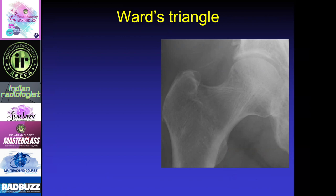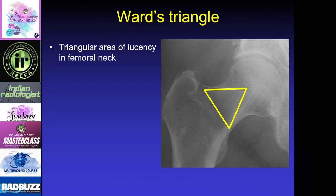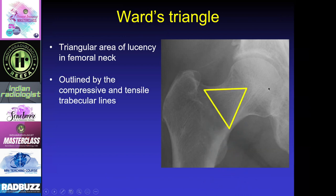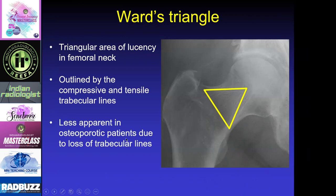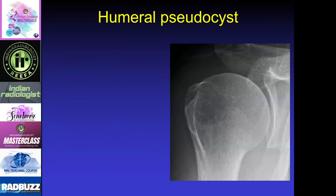Besides red marrow, there are a couple of other normal findings that can look like a lesion. One is Ward's triangle — a triangular area of lucency within the femoral neck outlined by the compressive and tensile trabecular lines of the femur. It is less apparent in osteoporotic patients due to loss of trabecular lines, and it is a normal finding. Another normal finding is the humeral pseudocyst.